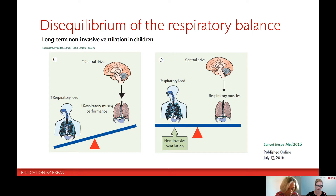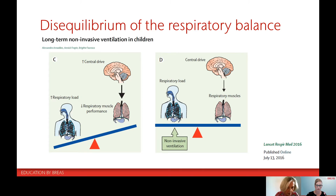This weakness has as a consequence a decrease in tidal volume and minute ventilation. The other type of disorders are characterized by an increase in respiratory load. This is observed in children having upper airway obstruction, because in this situation the respiratory pressure necessary to overcome the resistance of the upper airways is extremely high. Another type of disorders are lung disorders such as cystic fibrosis or bronchopulmonary dysplasia, which are characterized by an increase in the work of breathing due to an increase in the peripheral resistance of the airway.